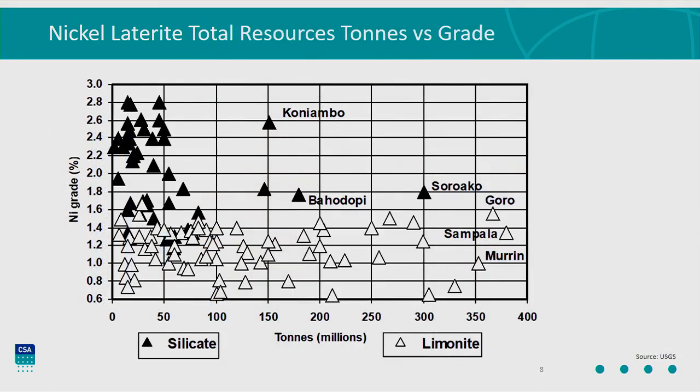Looking at nickel laterite resources around the world on a tonnage-versus-grade basis, one thing that laterites have going for them is economy of scale — they are very large deposits, sitting well out into the hundreds of millions of tonnes range, with reasonable grades for limonite deposits. Typically anything over 1% to 1.2% is looking interesting. With the saprolite deposits, the ferronickel smelters tend to be fairly small, although there are standouts — Sorowako, Bhandari, Codemin, Goro, Koniambo — very high grade and relatively high tonnage. These tend to be smaller and higher grade, because the ferronickel process requires a higher grade of nickel material for smelting.